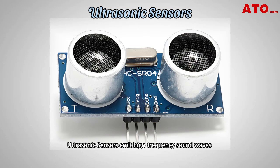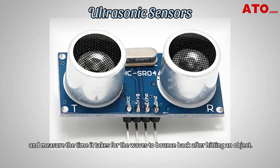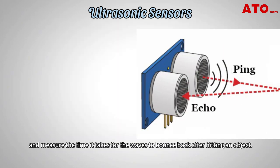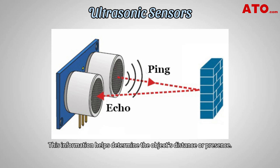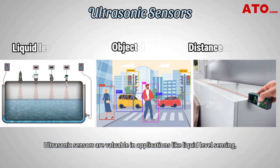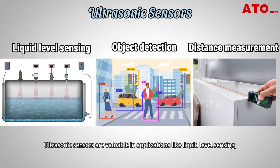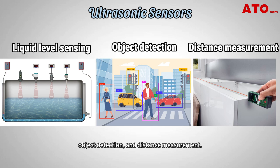Ultrasonic sensors emit high-frequency sound waves and measure the time it takes for the waves to bounce back after hitting an object. This information helps determine the object's distance or presence. Ultrasonic sensors are valuable in applications like liquid level sensing, object detection and distance measurement.